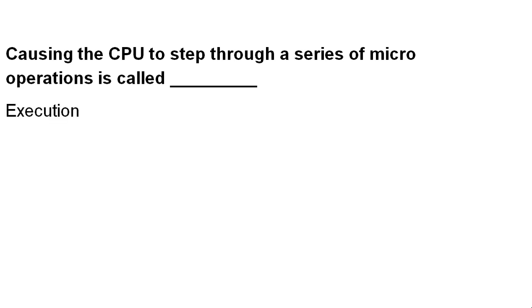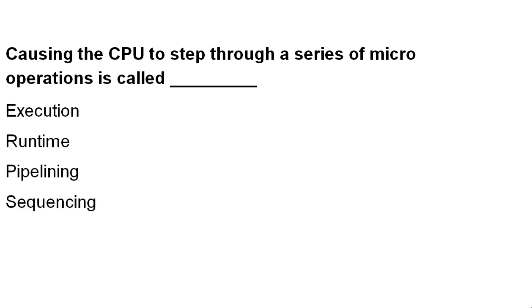Causing the CPU to step through a series of micro operations is called: Execution, Runtime, Pipelining, or Sequencing? The correct option is Sequencing.